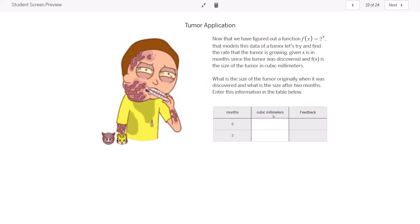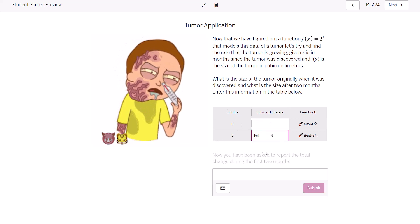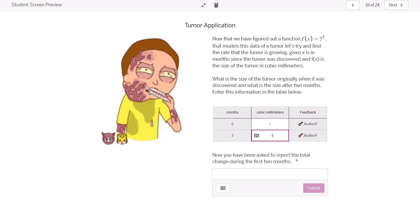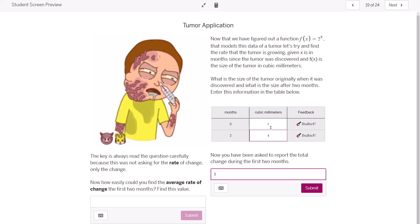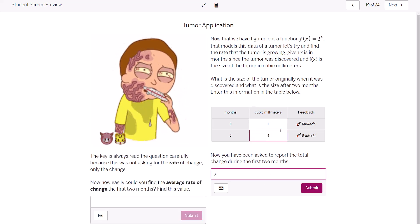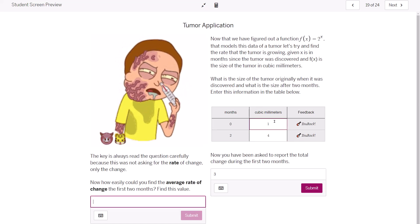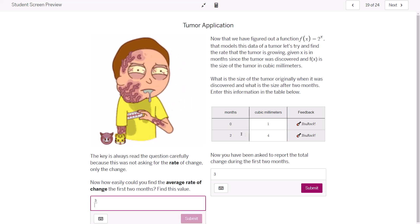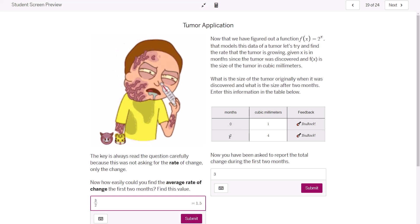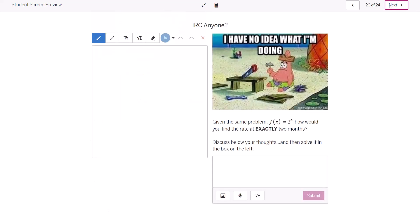All right. And so now here it's asking, this is just an X, Y table. So two to the zero is one, two to the second power is four. Now it's asking what this change is. Well, that's just four minus one. So the change in cubic millimeters. And now here is your average rate of change. Well, that's the change in your function that we just found over the change in time, two minus zero. And then I'll let you decide. Hopefully you can see which units to use.